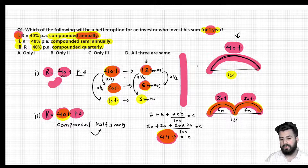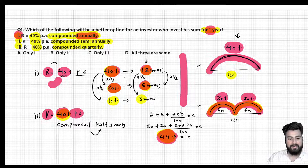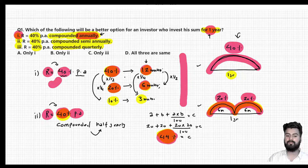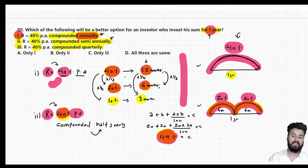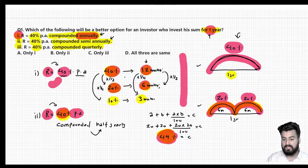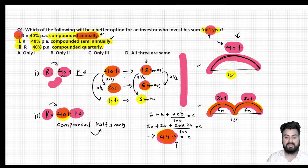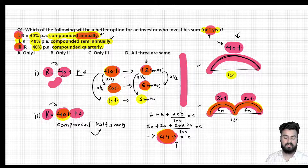What I want you to understand: if you look at the two cases carefully, the rate applicable is same, the time period is also same. The only difference is in the first case we are doing calculation of interest on annual basis, while in the second case after every six months — and this changes everything. In the first case effective rate of interest was 40%, while in the second case it is 44%. So you can see: the more the number of compounding periods, the more interest will be accumulated.